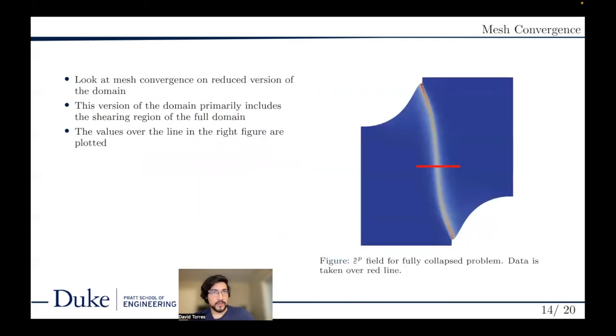For this mesh convergence study, we only consider the region surrounding the expected location of shearing. This is done to reduce computational expense. In this figure, you can see the typical shearing pattern, which is a close representation of what is observed in this region experimentally.